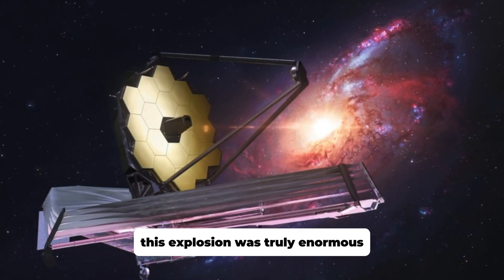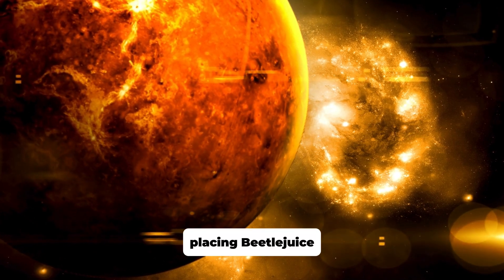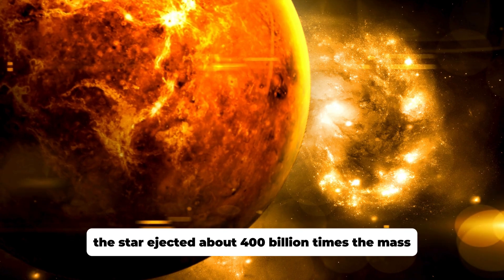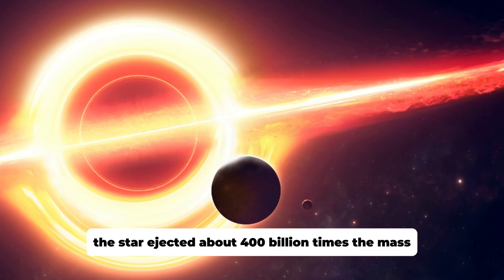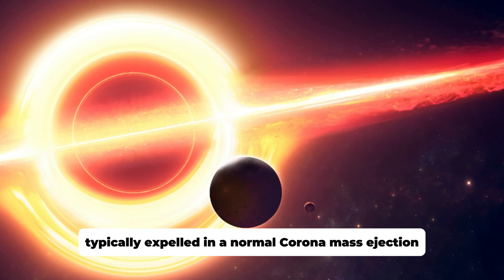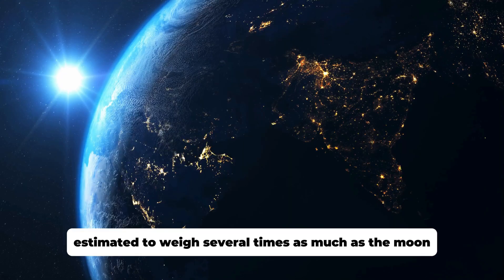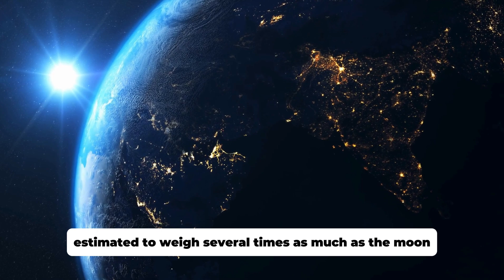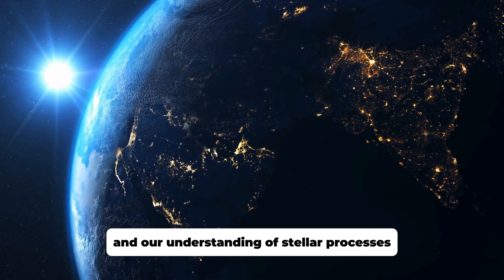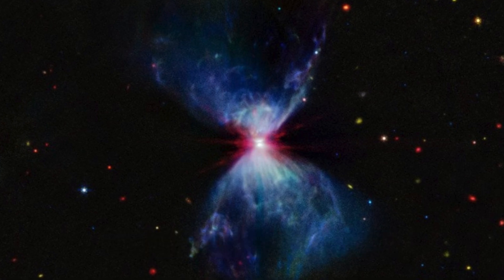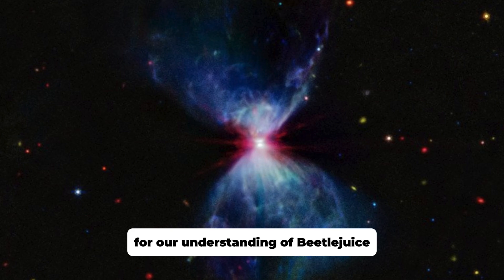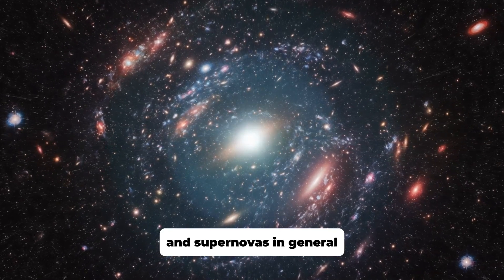This explosion was truly enormous, placing Betelgeuse at the center of astronomical attention. The star ejected about 400 billion times the mass typically expelled in a normal coronal mass ejection. This material, estimated to weigh several times as much as the moon, was a significant event for both Betelgeuse and our understanding of stellar processes. But what does such a massive explosion of matter mean for our understanding of Betelgeuse and supernovas in general?